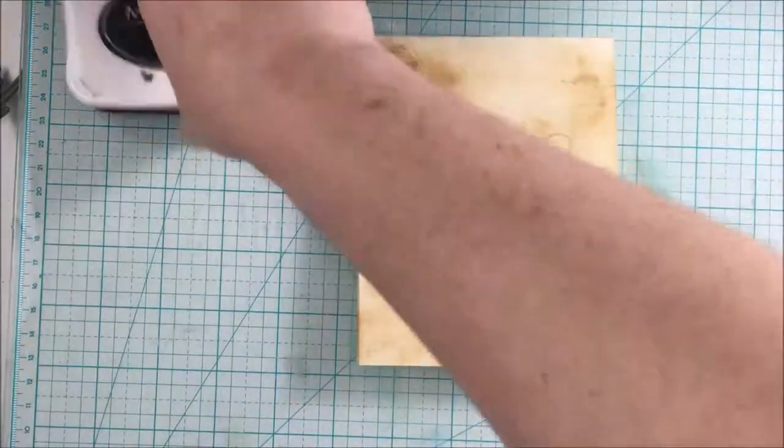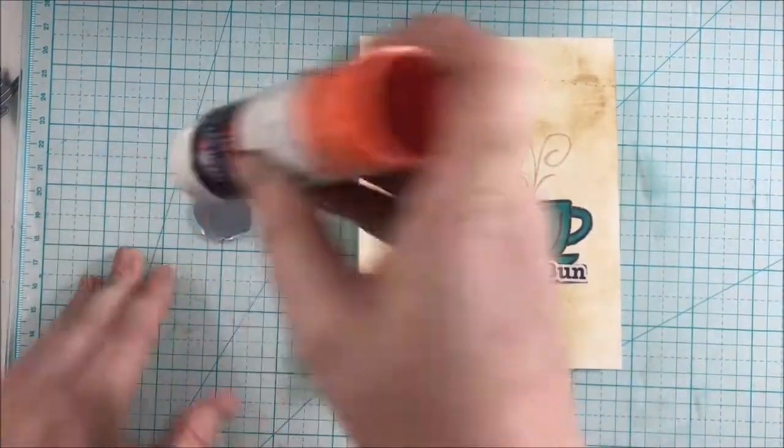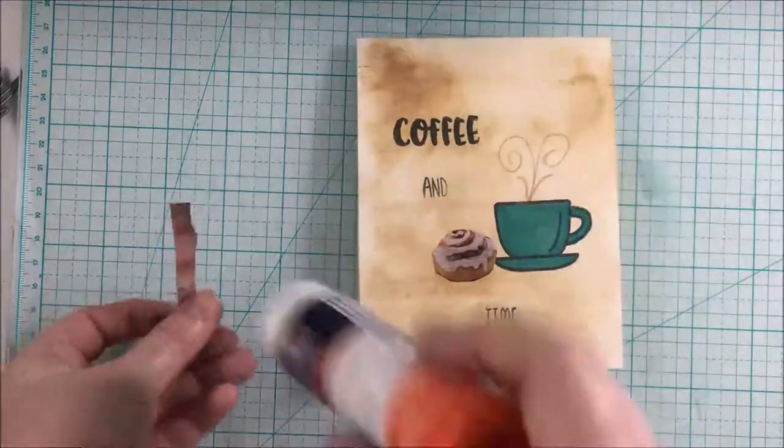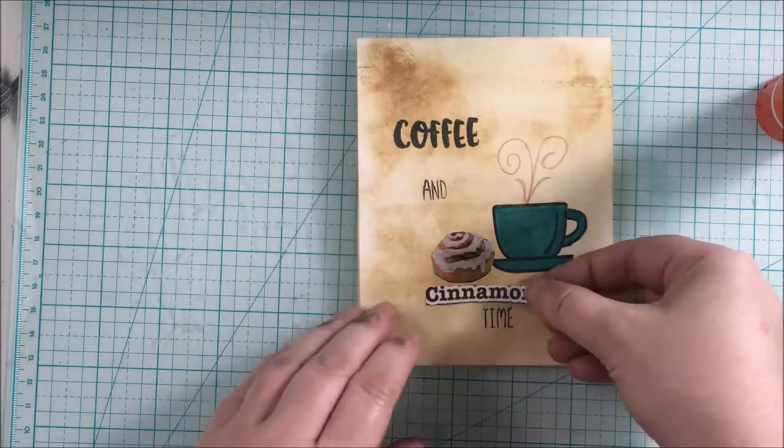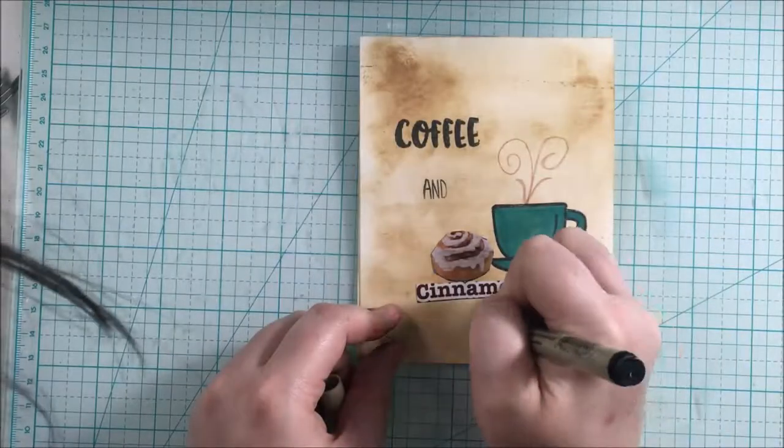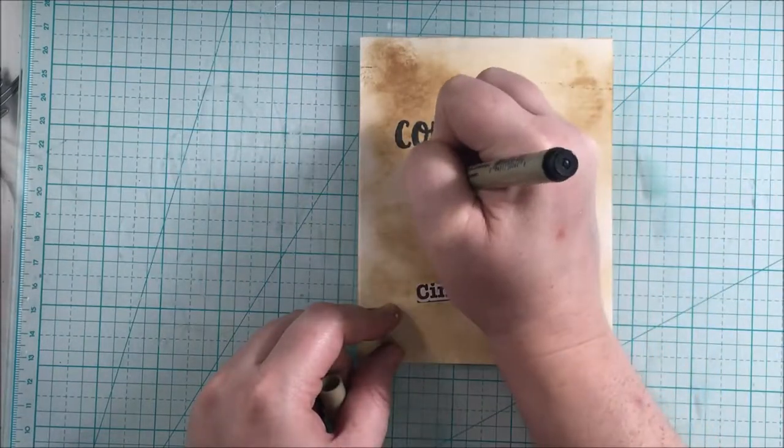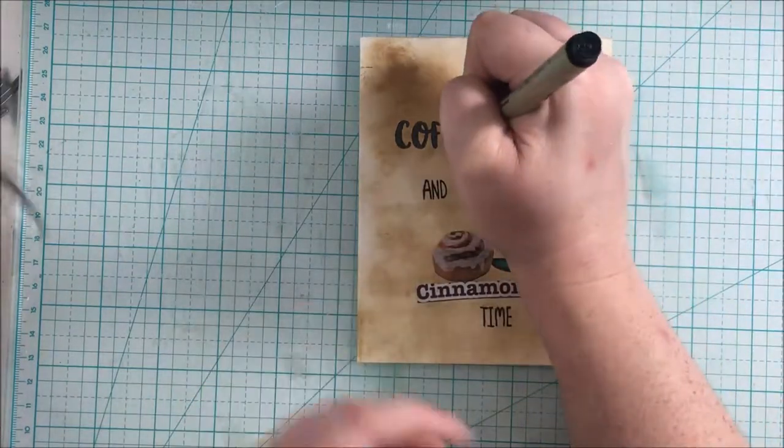This one says coffee and cinnamon bun time. I used the stamp set Perfect Blend again from Honeybee Stamps and then just adhering all of those little bits and pieces there together to the card. I ended up going over the letters here just with a black pen just to pop them out a little bit.